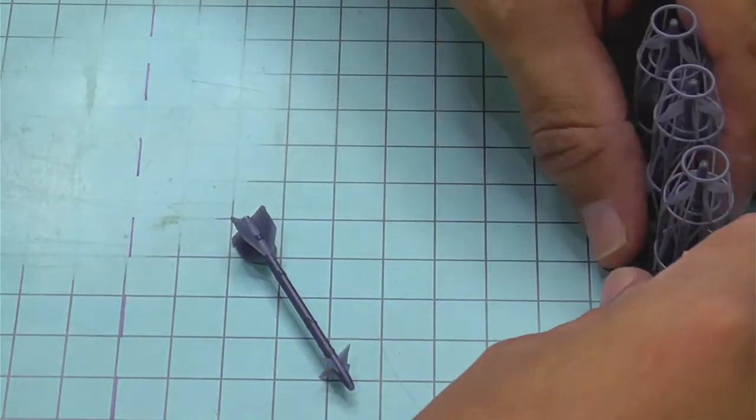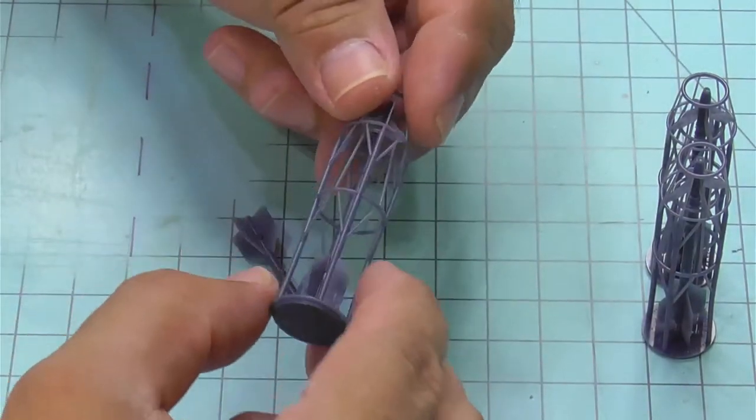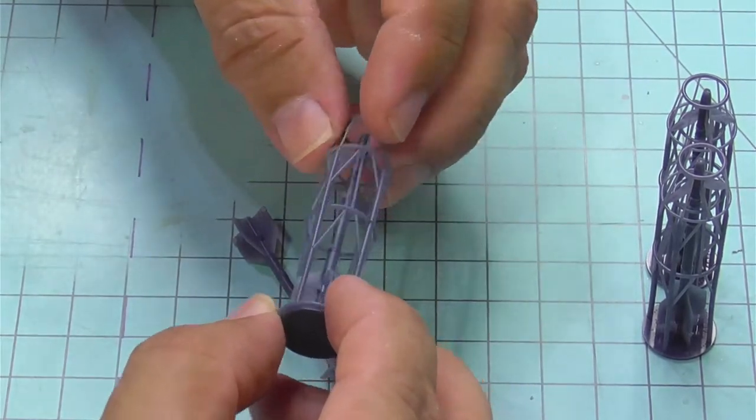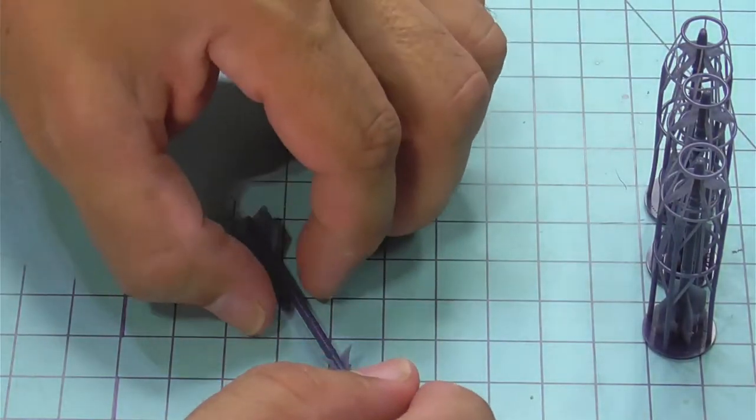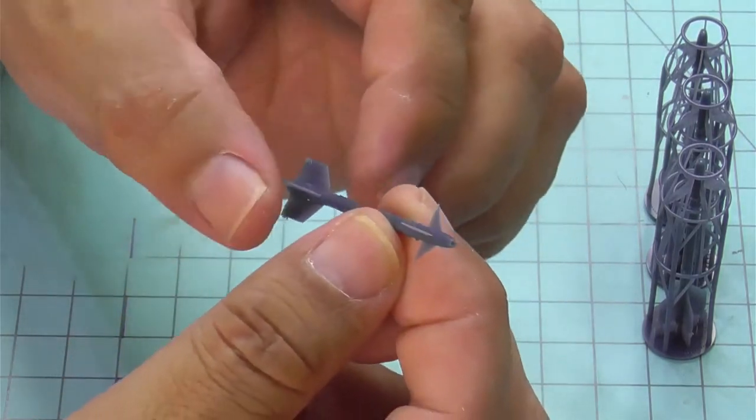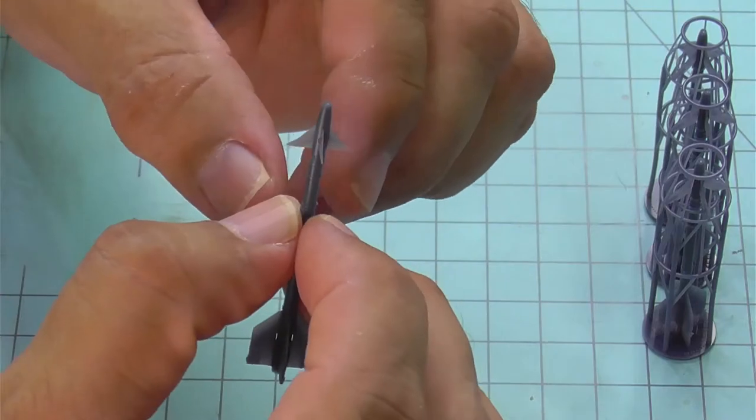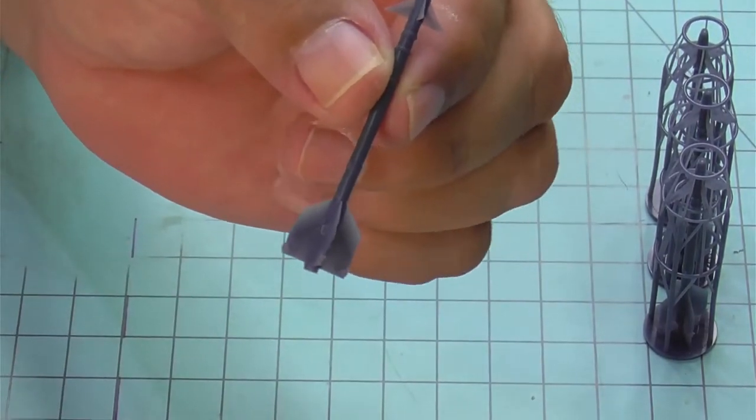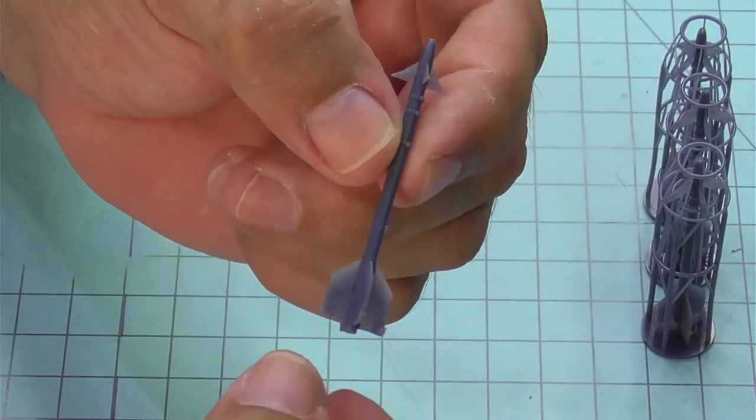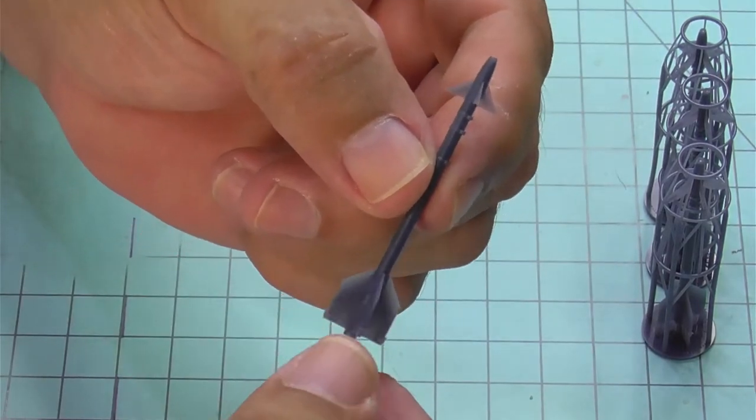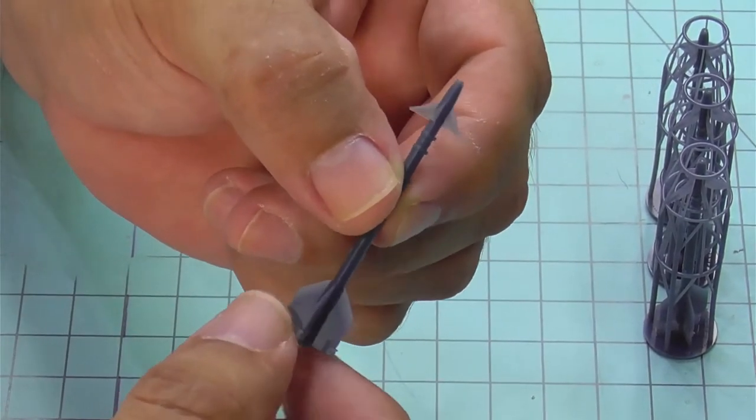As I said, you get the four missiles, and they all come in cages similar to this. And then this is the missile once it's removed from the cage. As you can see, it's what we refer to as an all-up round.